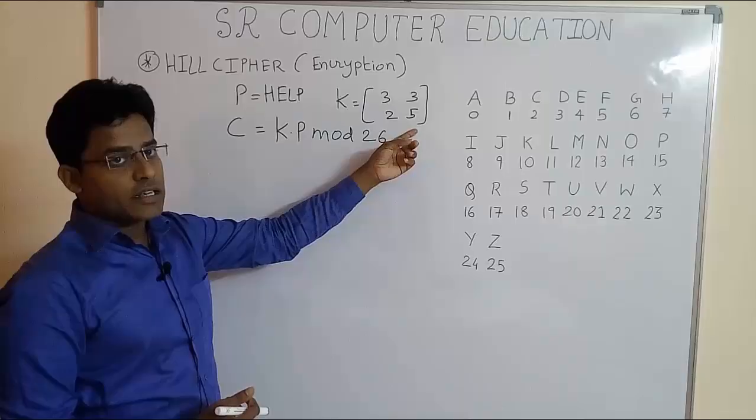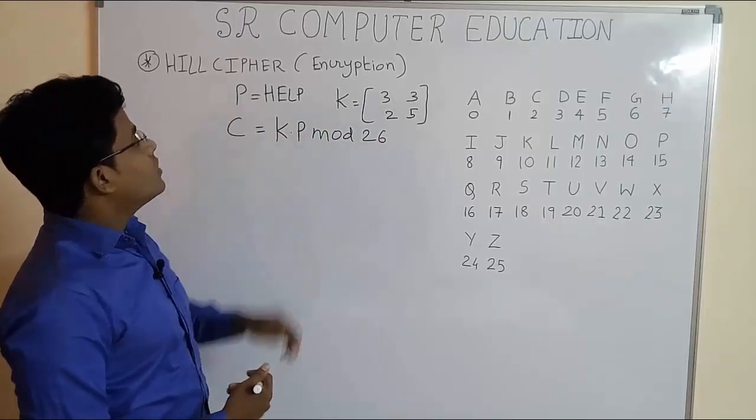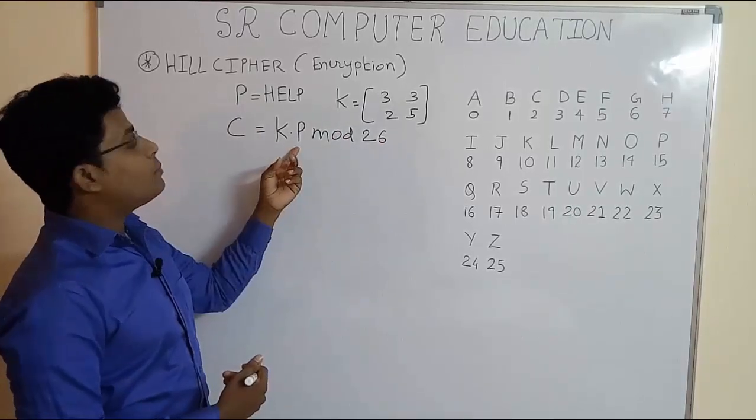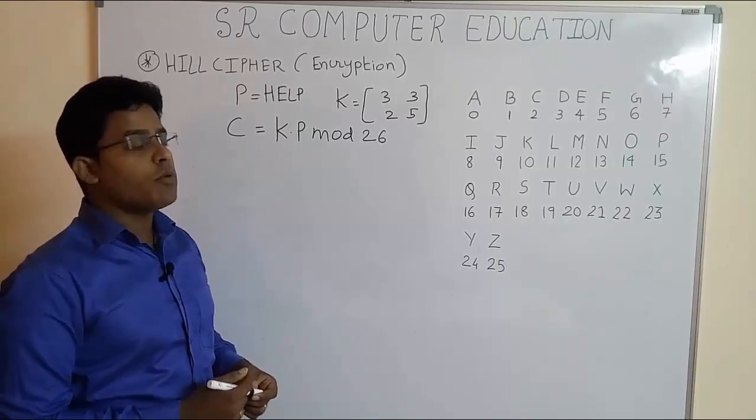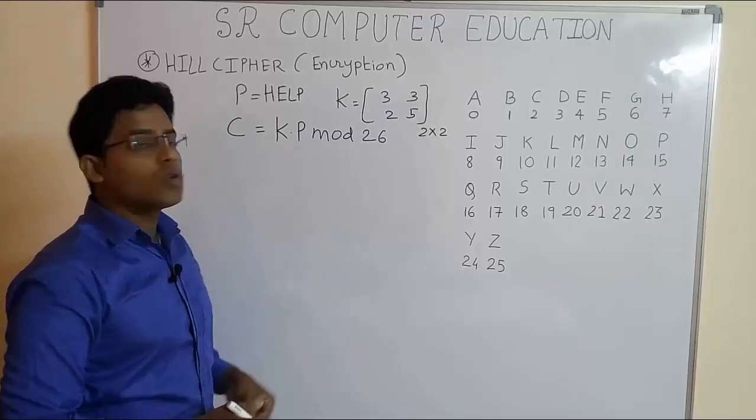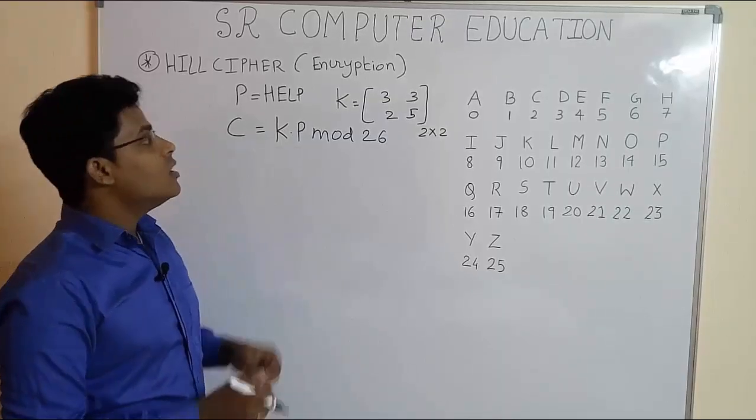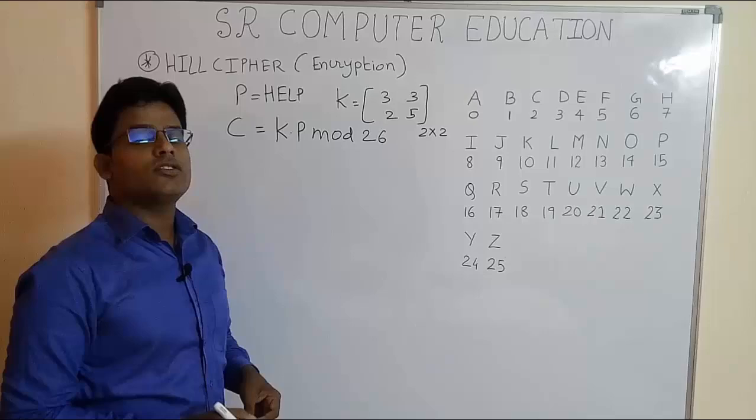Key is already given in matrix form. Now we have to get plaintext also in matrix form. Now we have to remember one thing here, it's very important. The given matrix is 2 by 2, 2 rows and 2 columns. So when the given matrix is 2 by 2, you have to make pair of 2 characters.